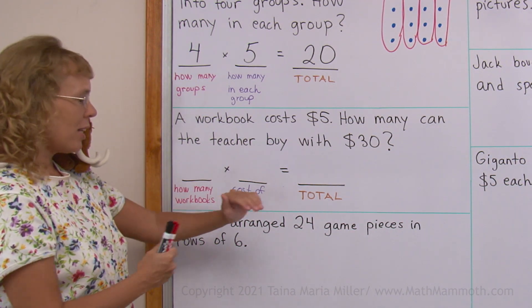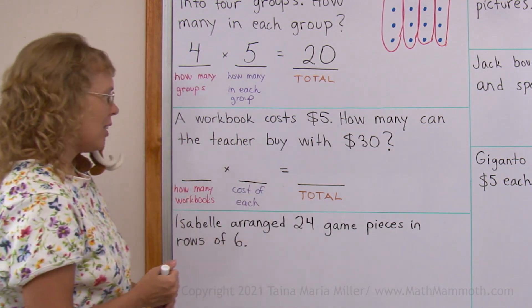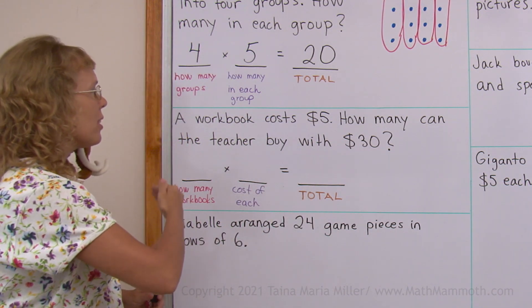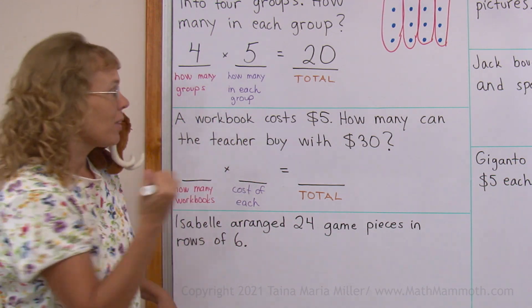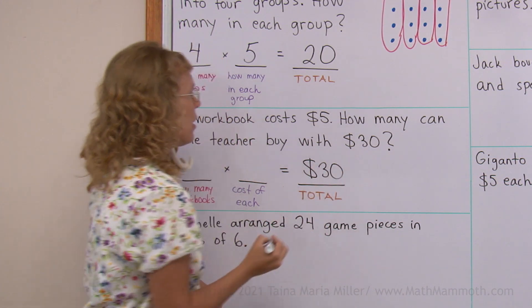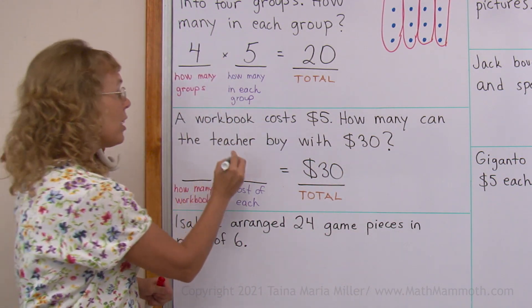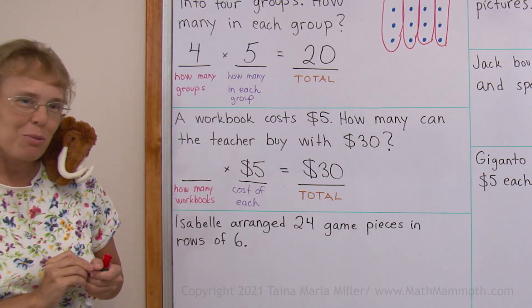How many can the teacher buy with 30 dollars? Again, we're going to write a multiplication. In a multiplication, you have the total as your answer. And this teacher buys so many workbooks for so many dollars each. And the total cost, we already know, it's 30. And we know the cost of each, five dollars each.